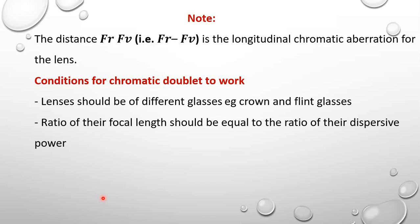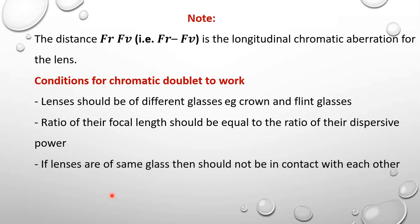That separation condition applies in the case where the lenses are not of the same material. We can use a convex lens and concave lens which are not of the same material, but if that is the case, the separation between them should be equal to the mean of their focal lengths. If they are of the same glass material, they should not be in contact with each other.